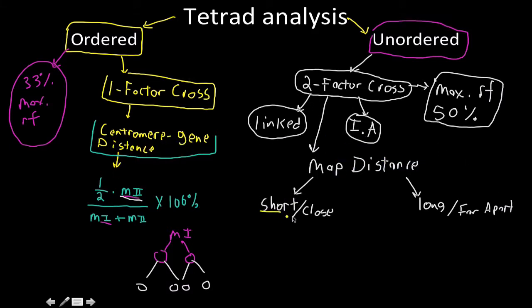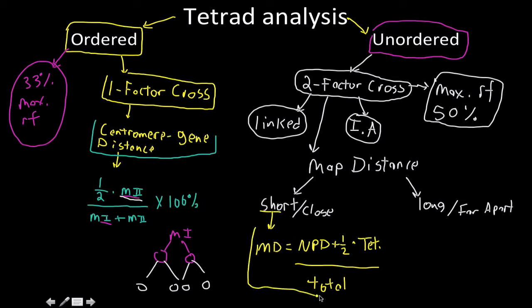When the genes are close together, the equation we use is: map distance equals the non-parental dietype plus one-half times the tetratype, divided by the total. That's what you do when they're really close together.